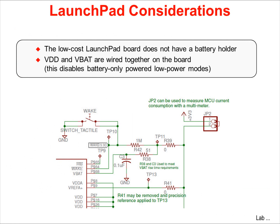The low-cost launchpad board does not have a battery holder. VDD and VBAT are wired together on the board, which disables the battery-only powered hibernation modes. We'll use the JP2 test pins to measure the current for the microcontroller only. Most digital multimeters have an issue with equivalent series resistance — if you have the DMM set to measure a very low current, this resistance may not permit a higher current to flow when needed, so you'll have to switch the mode on the meter.